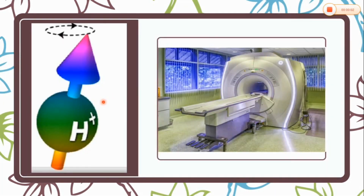The human body is composed of 70% water, meaning hydrogen is in abundance in the human body. In MRI, the magnetic properties of a hydrogen atom — an isotope of hydrogen called protium — are used to produce images. Protium has mass number and atomic number one, meaning it has a single proton and no neutron. It is a spinning charged particle. When there is no external magnetic field, hydrogen nuclei spin at random orientations, and therefore their magnetic moments are randomly oriented.